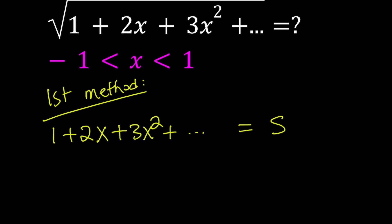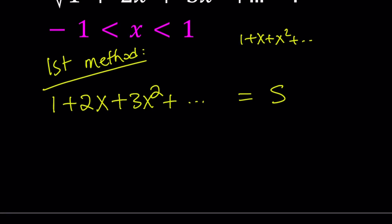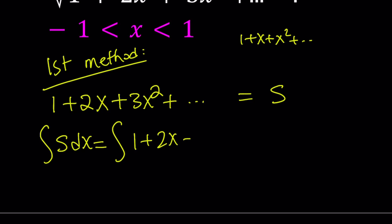I want to turn this into something that I can handle. If you remember, we have the famous geometric series 1 plus x plus x squared dot dot dot — the infinite version. I'm going to integrate both sides: the integral of S dx is going to be the integral of 1 plus 2x plus 3x squared, integrated term by term dx.